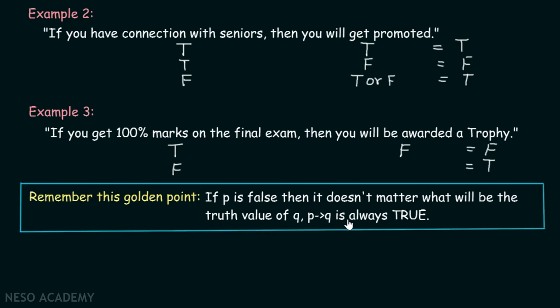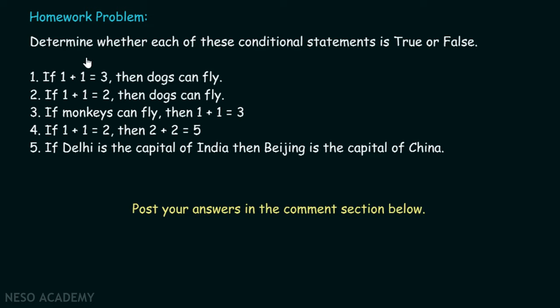Now let's consider the homework problem. Determine whether each of these conditional statements is true or false: (1) If 1+1=3, then dogs can fly. (2) If 1+1=2, then dogs can fly. (3) If monkeys can fly, then 1+1=3. (4) If 1+1=2, then 2+2=5. (5) If Delhi is the capital of India, then Beijing is the capital of China. You can post your answers in the comment section below.